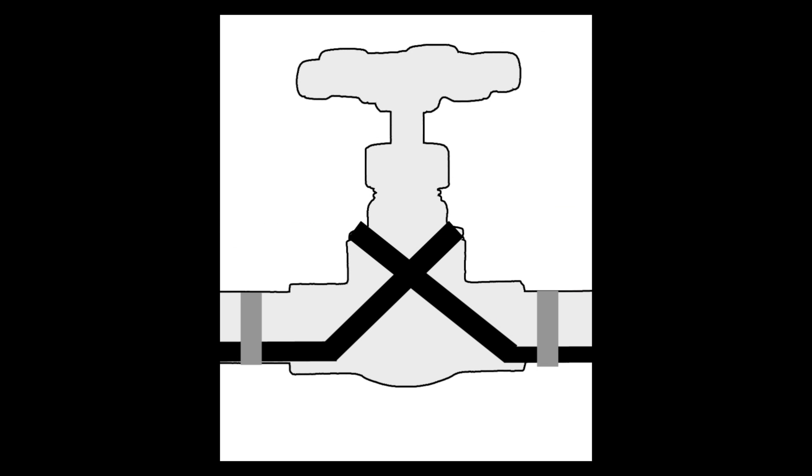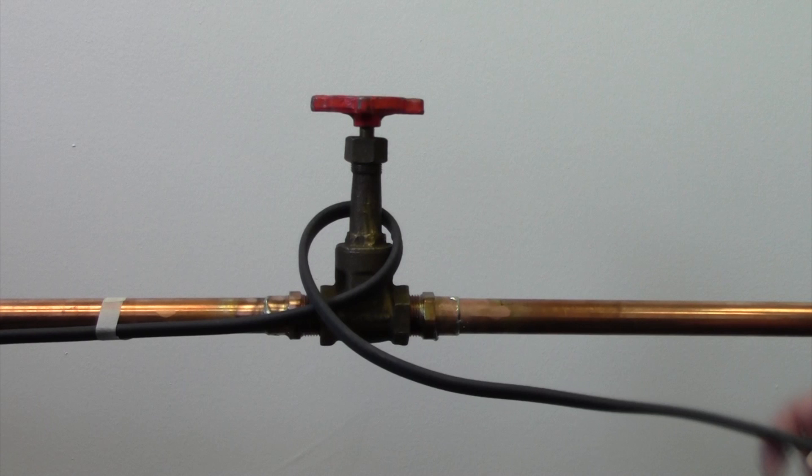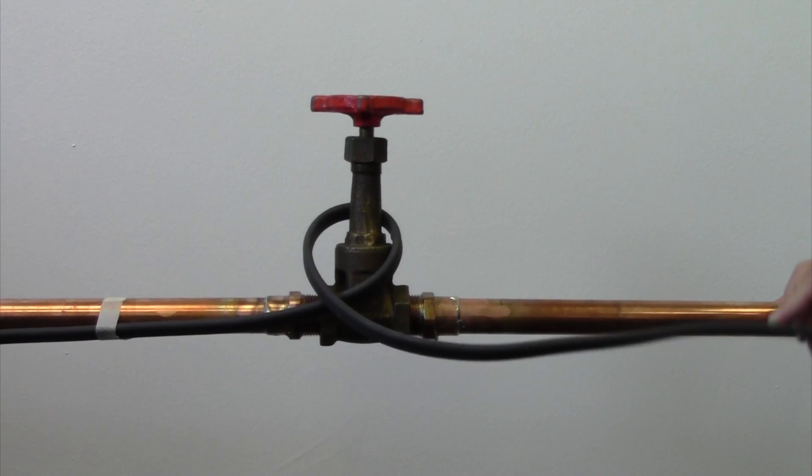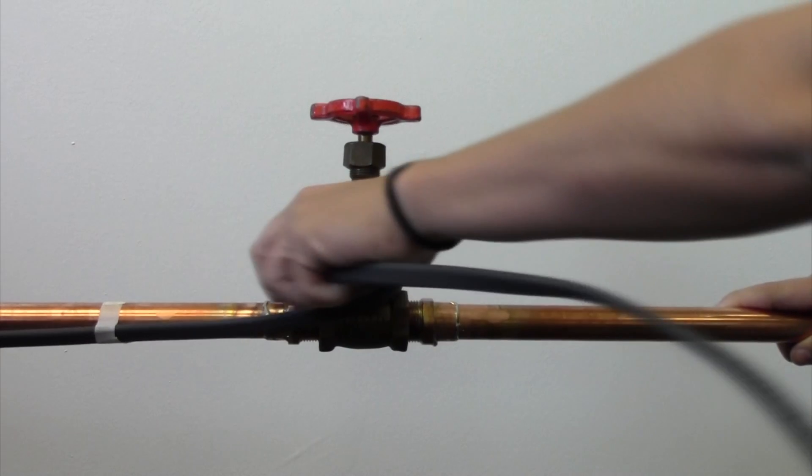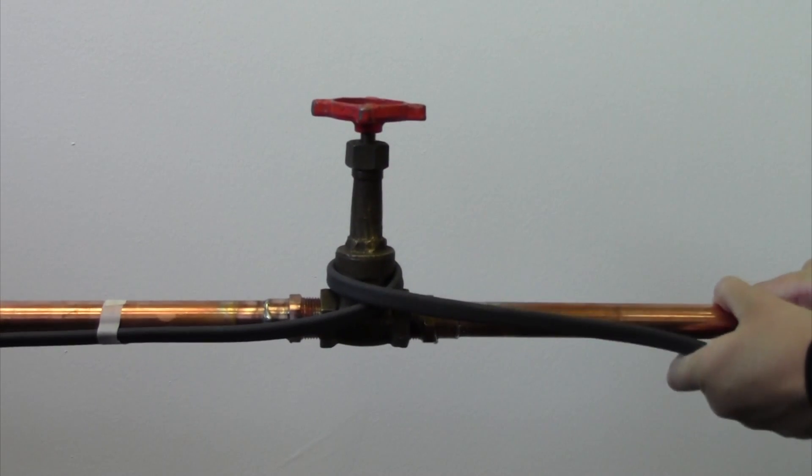To install around a valve, simply wrap the cable around the valve as shown. When looping the cable around a valve, the cable may overlap. Both the Speed Trace and Speed Trace Extreme cables are safe to overlap.